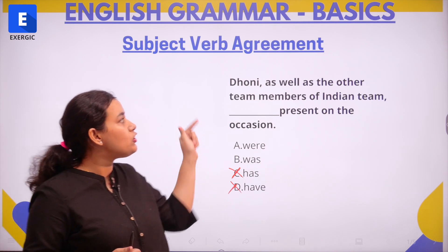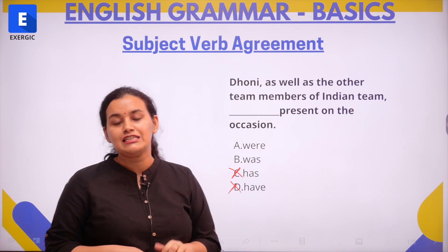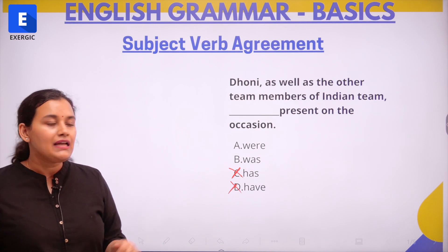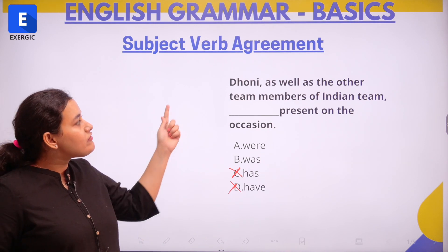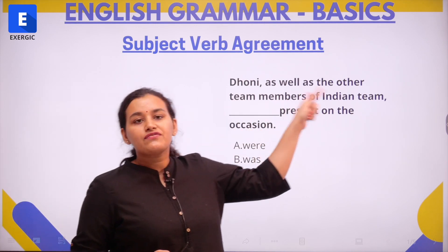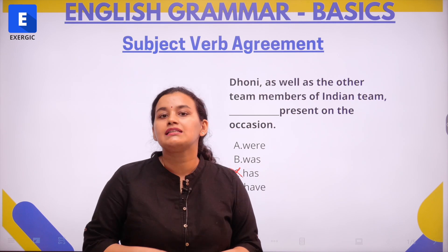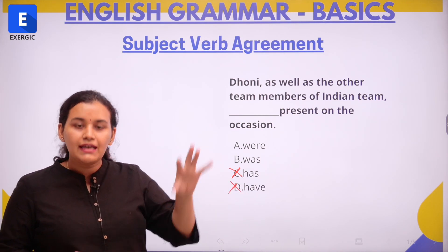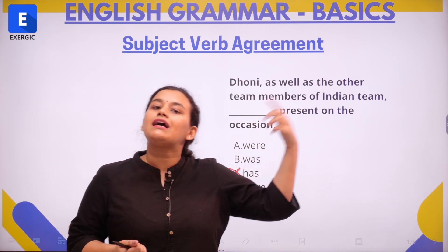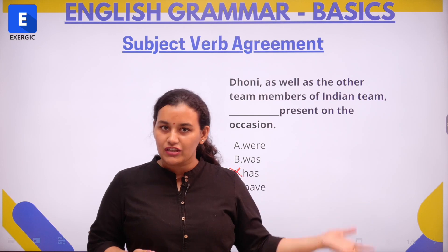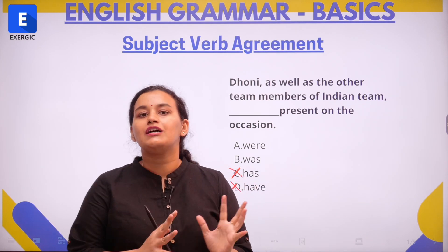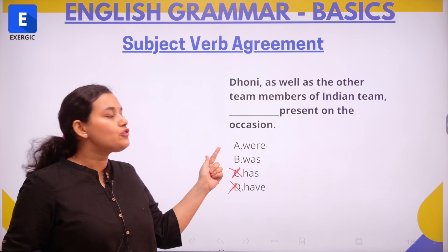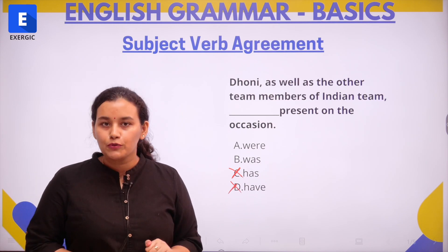We need to find out whether the subject in this sentence is singular or plural. Since they have said Dhoni as well as the other team members, this seems like a plural subject — Dhoni as well as the other members of the Indian team — so this appears to be a plural subject and the verb should also be plural.